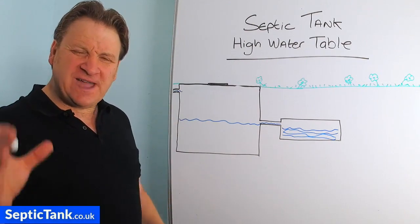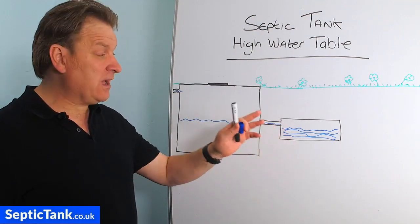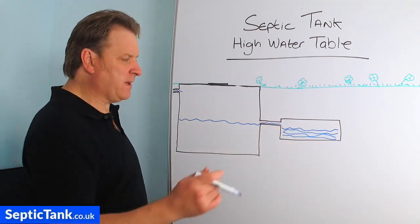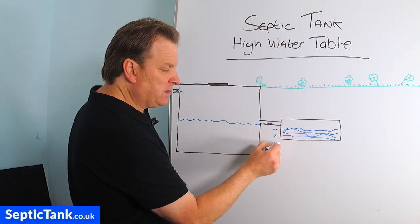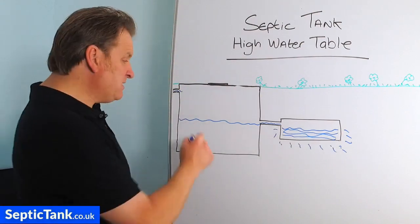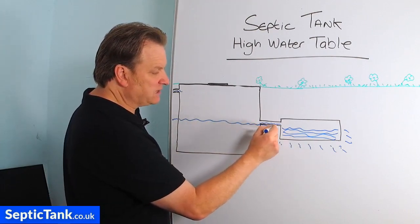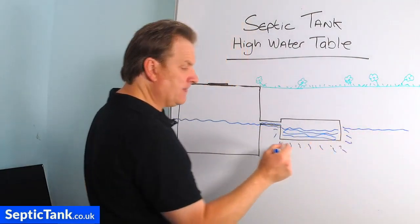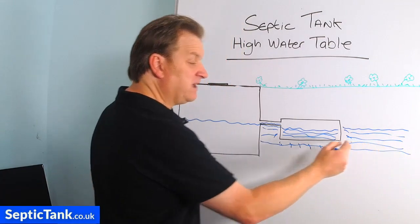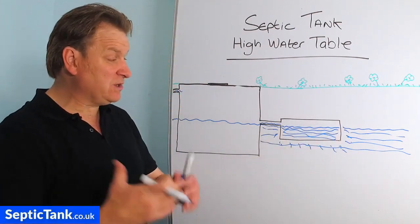If you live in an area with a high water table, it will affect the function and the permeability of the water in the soakaway. Normally the water would just soak away naturally into the soil. But when you've got a high water table — say the water table is the same height as the water level in the septic tank — your soakaway becomes surrounded by water and can't soak away anymore, because the height of the water table will engulf and consume your soakaway.